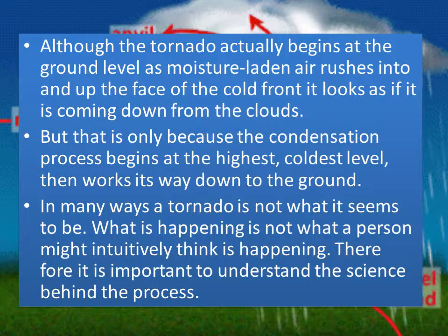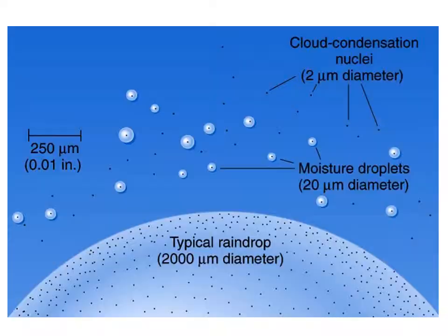In many ways the tornado is not what it seems to be. What is happening is not what a person might intuitively think is happening. Therefore, it is important to understand the science behind the process. Here we have condensation particles — little black particles that are floating around. A typical raindrop is 2,000 units in diameter and has many little particles in it because many vapor molecules have condensed. It begins condensing on one little particle, then many molecules condense on that particle of liquid water. Eventually the large raindrop gets so big that the wind can't keep it up and it falls as rain or some other form of precipitation.